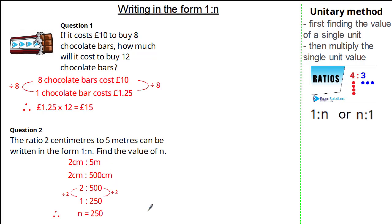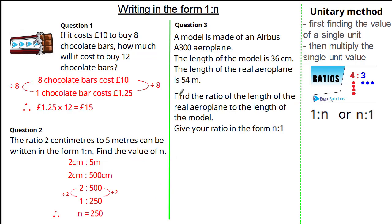Here we have an example of a question asking for 1 to n. So now let's look at an exam question asking for n to 1. This question states that a model is made of an Airbus A300 aeroplane. The length of the model is 36 centimetres and the length of the real aeroplane is 54 metres.